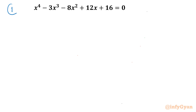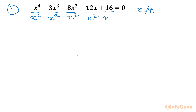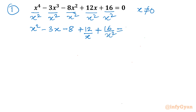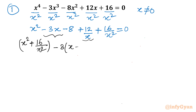Method number one. As you can see, x equals 0 is not a solution of this equation, so I can divide this equation by x squared. After dividing, I will get x squared minus 3x minus 8 plus 12 over x plus 16 over x squared equals 0. Now the first and last terms form a reciprocal structure. I will write 16 over x squared in one bracket, then consider minus 3x and 12 over x together, taking minus 3 common to get x minus 4 over x.